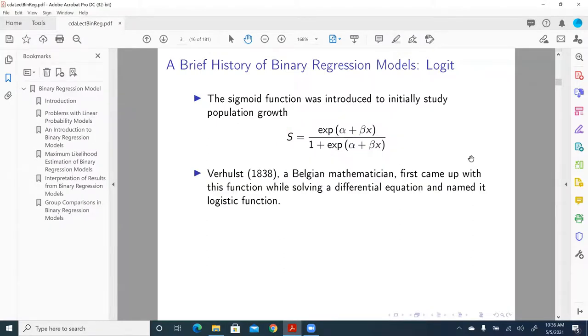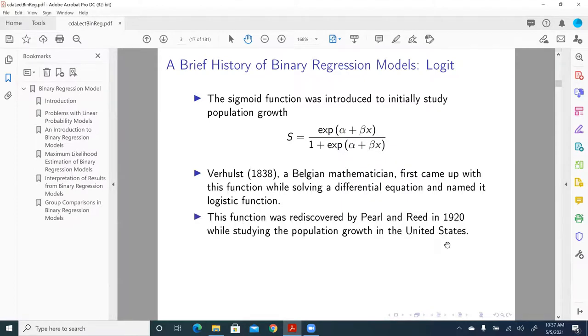And Verhulst in 1838, he is a Belgian mathematician, first came up with this function while solving a differential equation and named it logistic function. This function was rediscovered by Pearl and Reed in 1920 while studying the population growth in the United States.